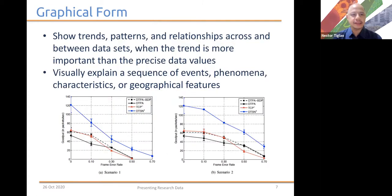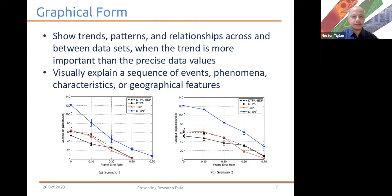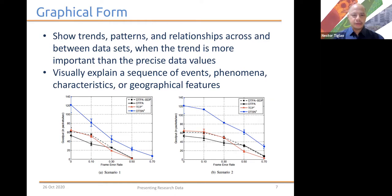The last kind of data presentation is using graphical form or figures. This type of data presentation is very effective in showing trends and patterns, as well as relationships across different data sets, which is difficult to show when you use either text or a table. The trend is more important than looking at the precise data values. This is also used to visually explain a sequence of events, phenomena, characteristics, or geographical features.